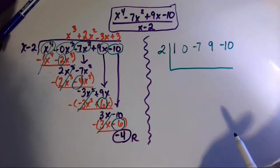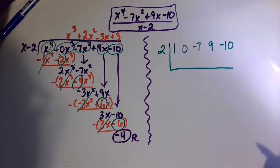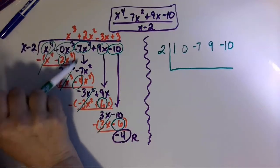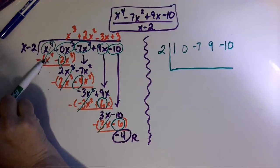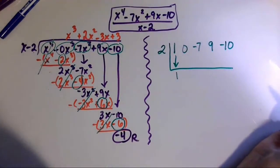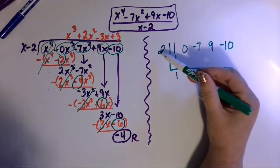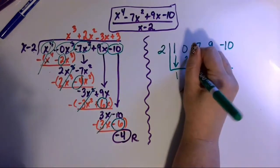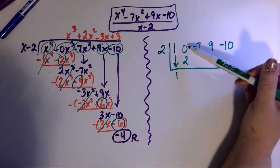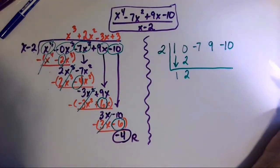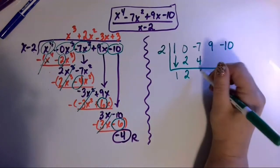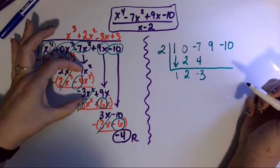In the first trip through the division algorithm, the first term always comes down unchanged, so I just bring down that first term: 1. Then I multiply 1 times 2 to get 2, and write that underneath the 0. So I have 0 and 2; adding those together gives 2. Then 2 times 2 is 4; adding negative 7 plus 4 gives negative 3. That represents the step where negative 7 minus a negative 4 equals negative 3.